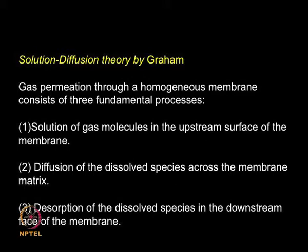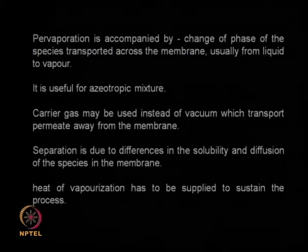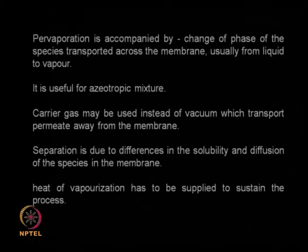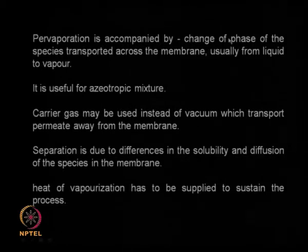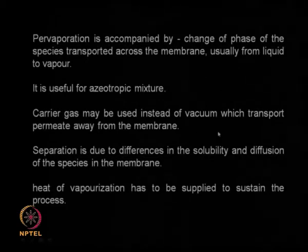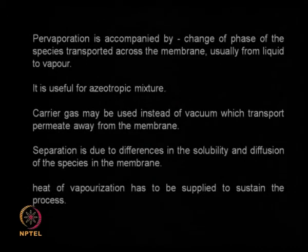In pervaporation there is always a change of phase: the liquid goes into vapor, diffuses through the membrane, and then the vapor goes back into liquid. It is very useful for azeotropic mixtures. You can also use a carrier gas instead of vacuum on the downstream — the carrier gas sweeps the vapor diffusing out of the membrane. The separation is due to differences in the solubility and diffusion of each species in the membrane.